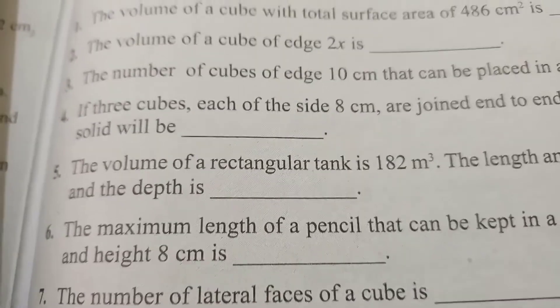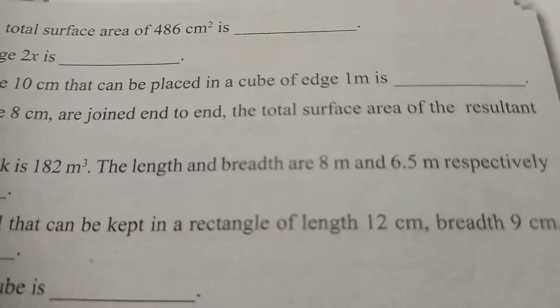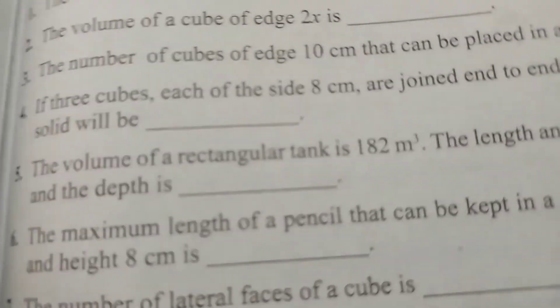Fifth question: the volume of a rectangular tank is 182 meter cube. The length and breadth are 8 meter and 6.5 meter respectively, and the depth is? We have to find the depth.